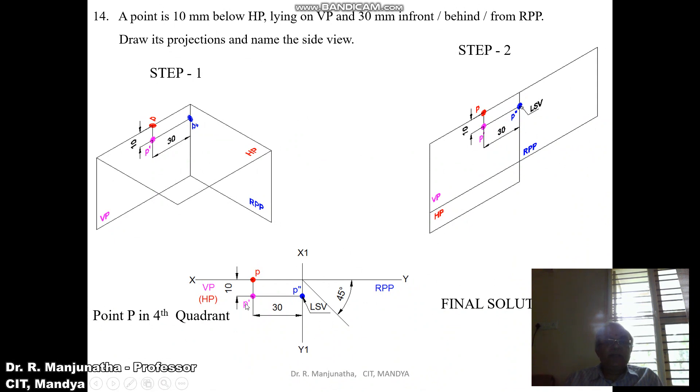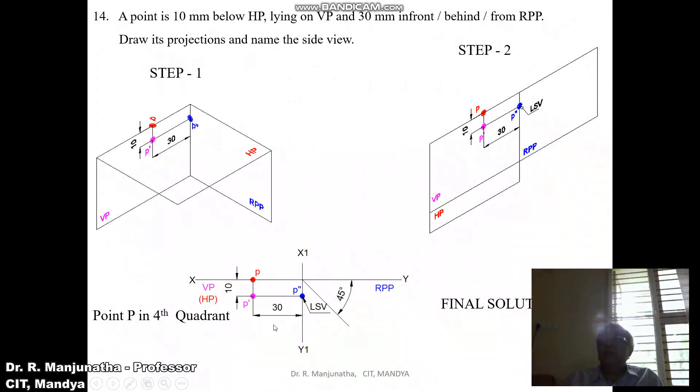Name the points p, P dash, and P double dash and give the dimensions. The point P is in the fourth quadrant.